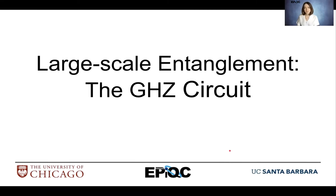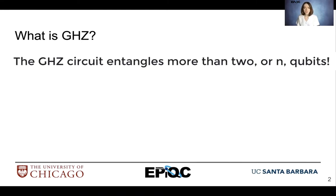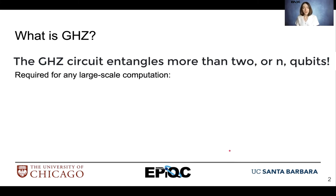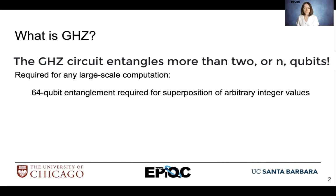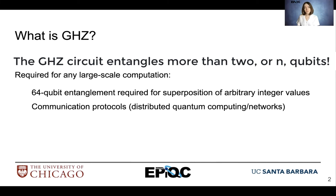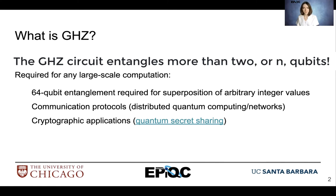We're going to look at large-scale entanglement and how we create it using the GHZ circuit. GHZ is a special circuit that defines how to entangle n qubits — more than two. Entangled states containing a large number of qubits are required for representing multiple integers in superposition, communication protocols such as those used for distributed quantum computing, and cryptography applications.